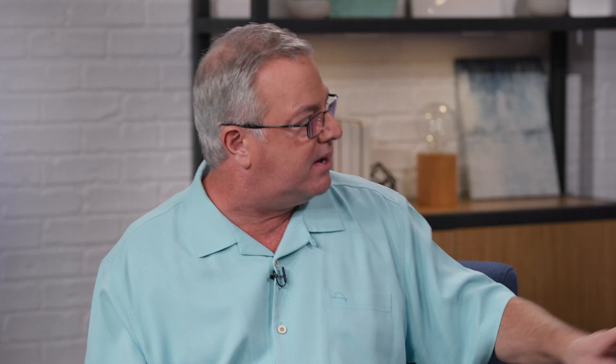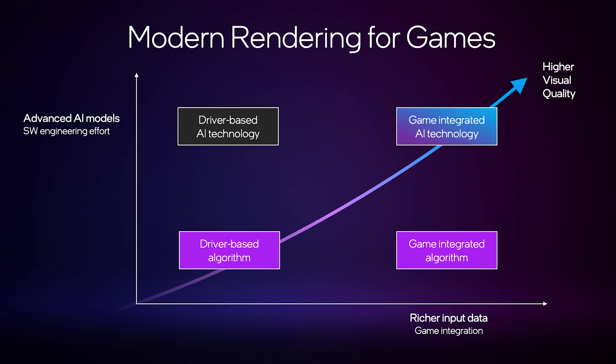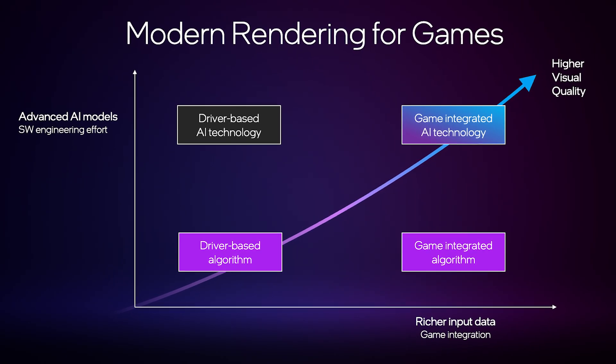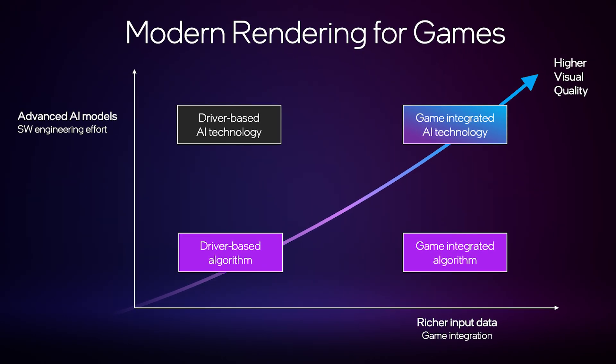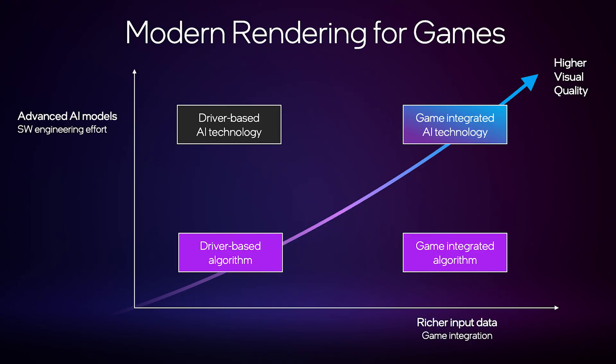This is a chart that shows our options as engineers. We can either do a traditional algorithm — doing shaders and traditional calculations — or we can embrace AI, which is what these algorithms on top represent. These are all AI-based algorithms. You also have the choice of being game-integrated, where you're using lots of information, or just driver-based. Game integration and AI are harder, but you get much better results, and that's where XESS 2 is: AI-based game-integrated generation.